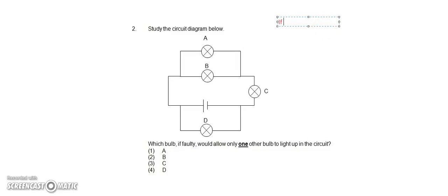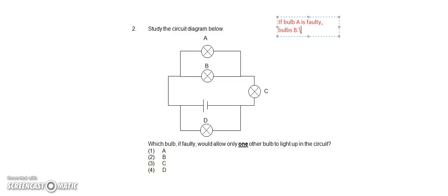What will happen if bulb A is faulty? If bulb A is faulty, the electric current will still be able to pass through B, C, and D as well. So actually all other three bulbs will light up — bulbs B, C and D will still light up.